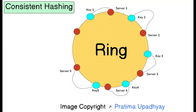Instead of directly mapping keys to a fixed number of cache nodes, we take a different approach: consistent hashing. Its main goal is to minimize data redistribution when a server is added or removed from the cluster. In consistent hashing, data and server nodes are assigned a location on a ring, and based on the hash function, data is stored in the first cache server that appears clockwise from its position. We will have a separate video on consistent hashing, as it is also a very important topic from a system design interview perspective.